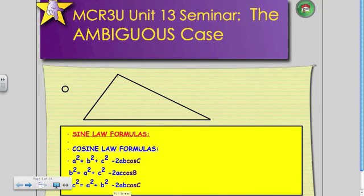This is the Unit 13 seminar on the ambiguous case. As we mentioned before, the word ambiguous means vague, unclear.